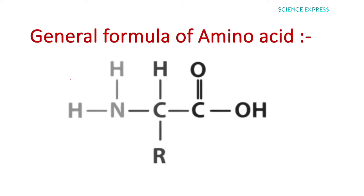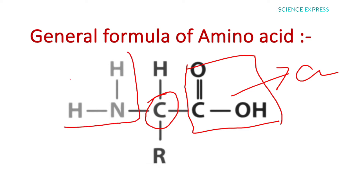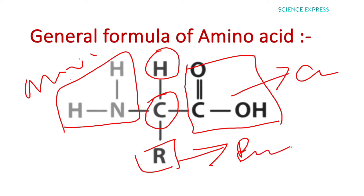The general formula of amino acid has the alpha carbon at the center. On the right-hand side is the carboxyl group, on the left-hand side is the amino group, and there is also a hydrogen. The lower portion is called the R group, which is the functional group.